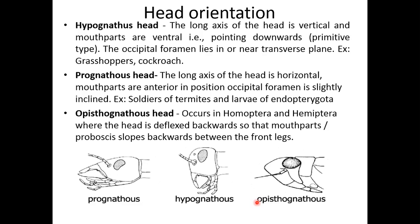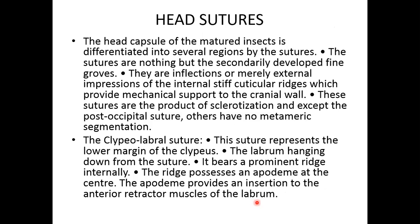There is the opisthognathous type, when the mouthparts are directed backward, as seen in bugs and Hemiptera, where the head is deflected backward so that the mouthparts slope backward between the front legs. This kind of head is known as opisthognathous.